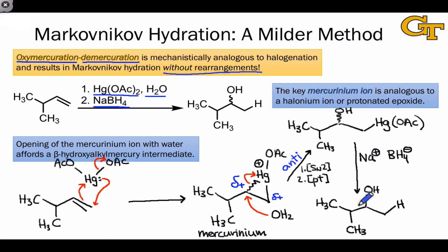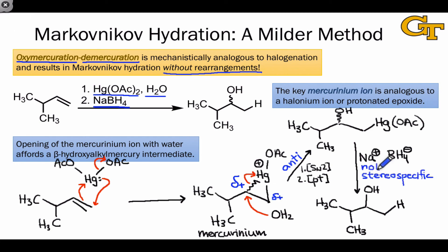To decide whether the overall addition of OH and H is syn or anti, we also need to understand whether the replacement of the mercury group with hydrogen occurs with retention or inversion of configuration. Unfortunately, this stage does not display any kind of stereospecificity — it often gives a mixture of syn and anti products. For that reason, we're not going to concern ourselves too much with the stereoselectivity of this reaction, except to say that it gives a racemic mixture of enantiomers when achiral alkene starting materials are involved.